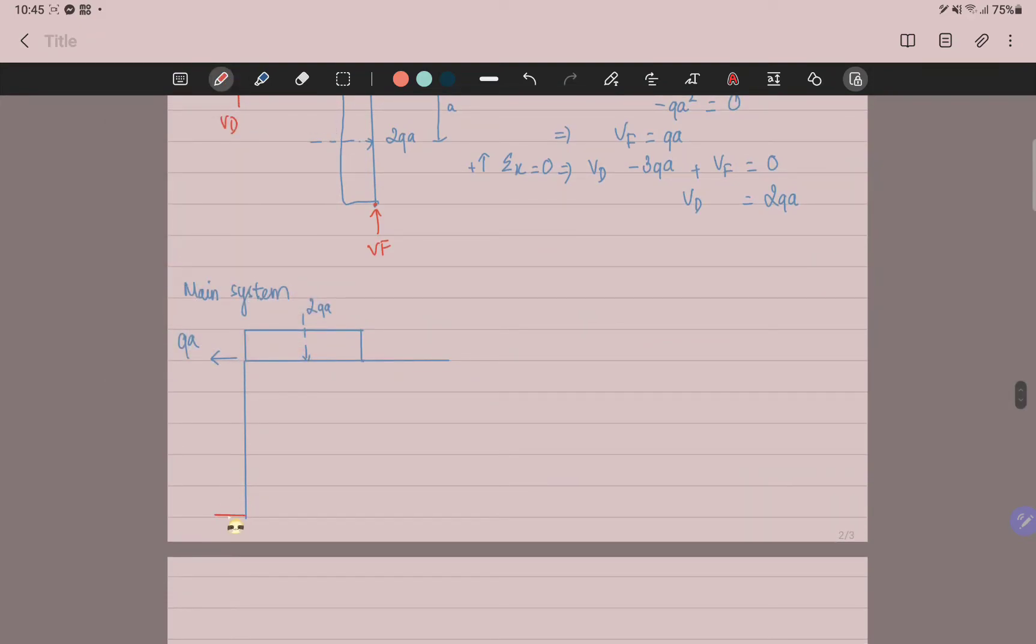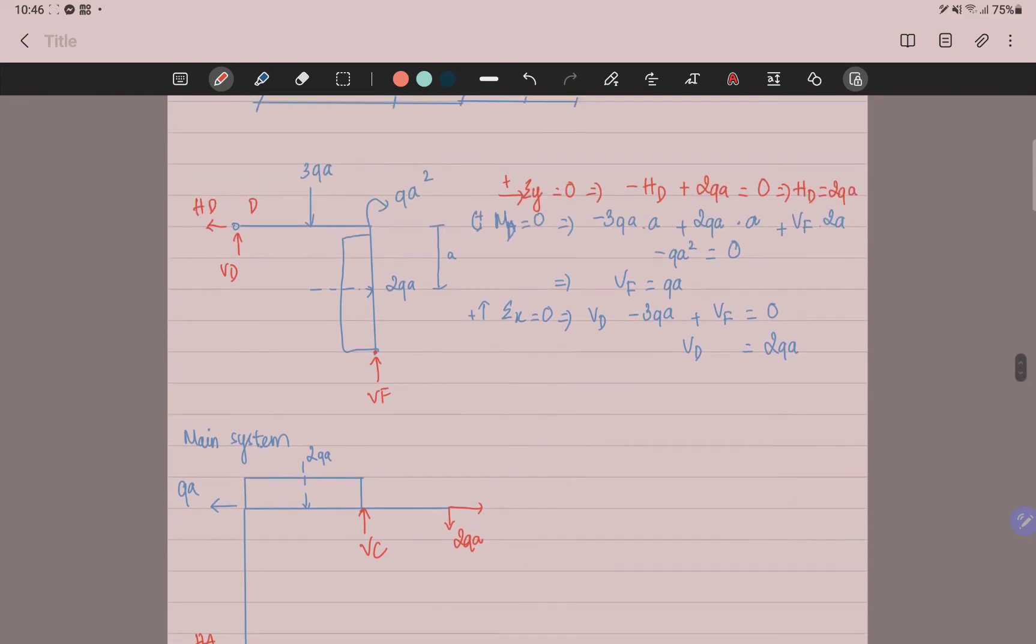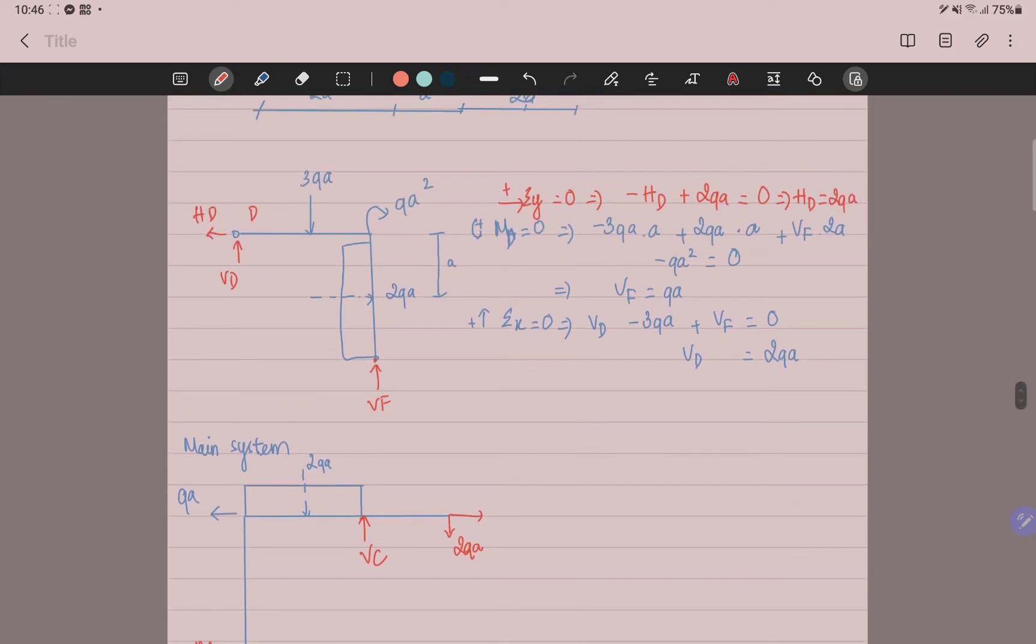This is the HA, VA, VC, 2QA. Because the HD and VD is equal to QA, you change the direction.